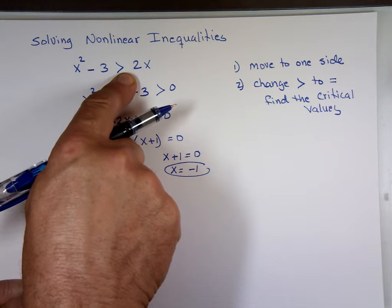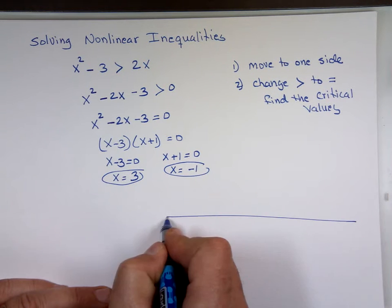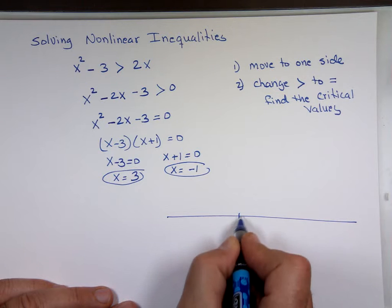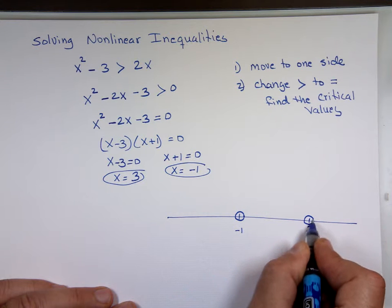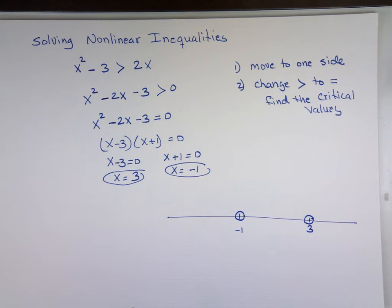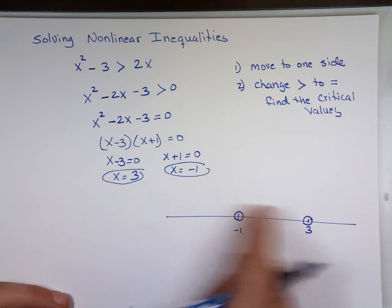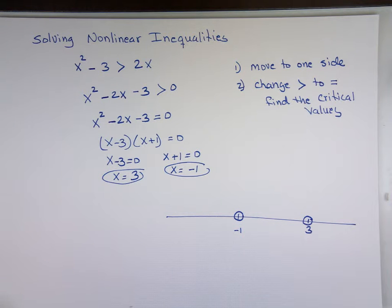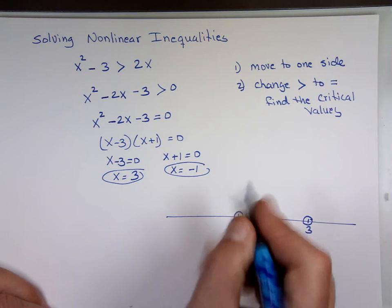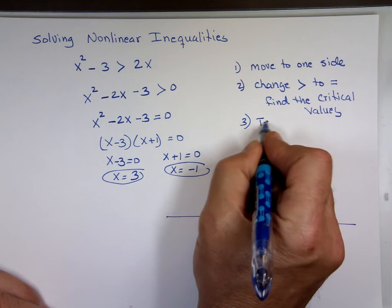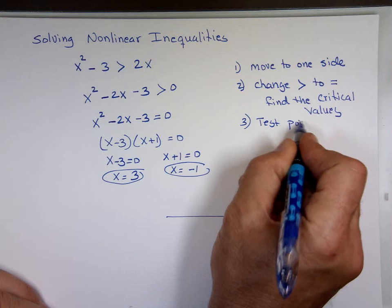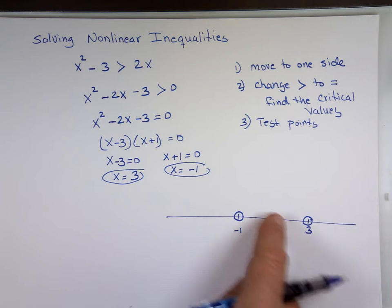We found two critical values. Notice there's no equal sign in the original inequality. On the number line, negative 1 is an open circle and 3 is an open circle. Now the question is: which region is the answer — to the left of -1, between -1 and 3, or to the right of 3?